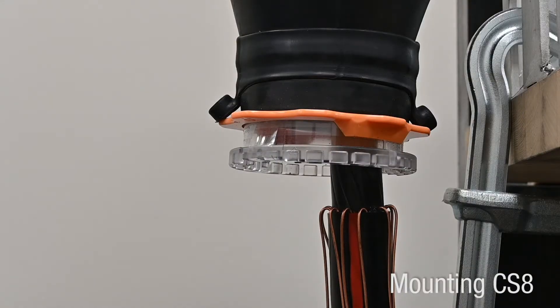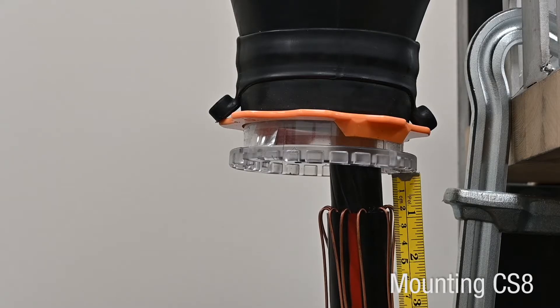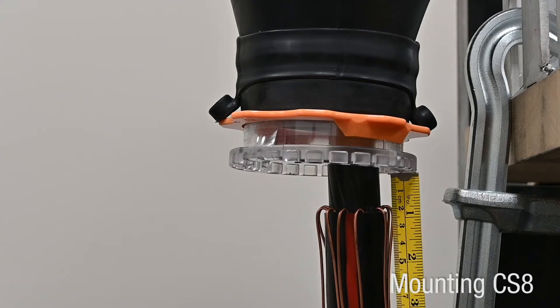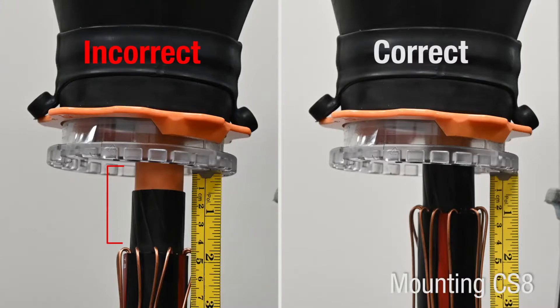Re-measure distance from the edge of the core to the jacket cutback. Confirm this distance has not changed more than 3 quarters of an inch. If the cable has shifted, assembly must be redone. Contact the factory for more details.